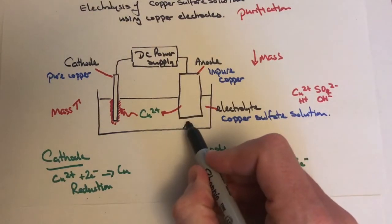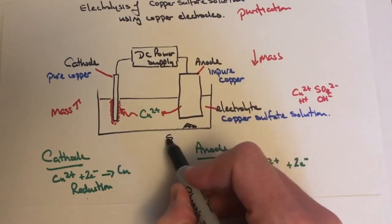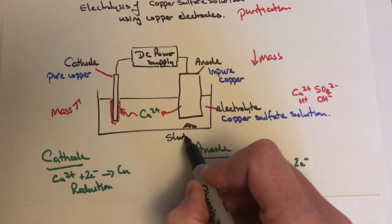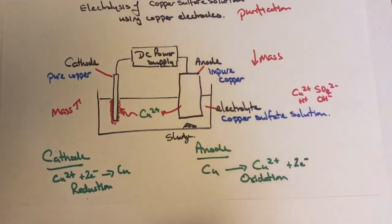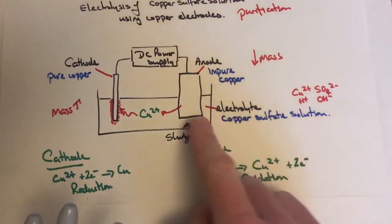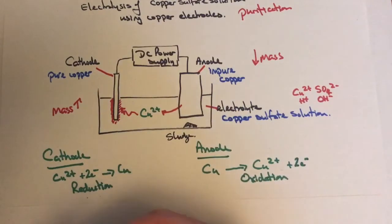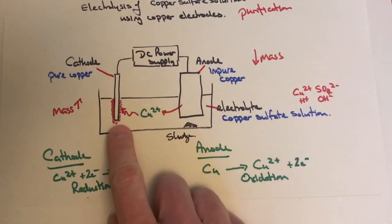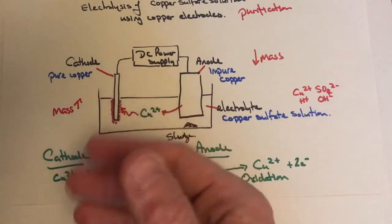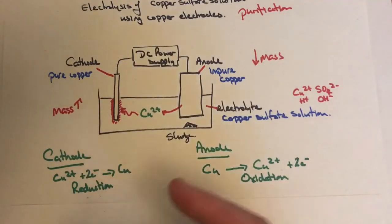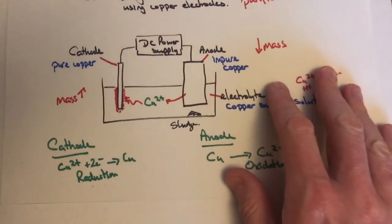At the bottom, you get a pile of sludge—the impurities that sink to the bottom. The pure copper metal forms at the cathode and is taken away to be used.